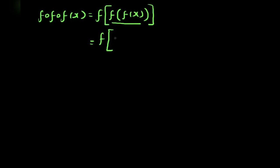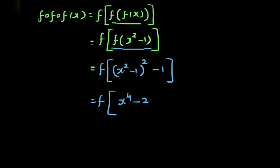So f of x square minus 1. We substitute where x is equal to x to the fourth minus 2x square. So f of x to the fourth minus 2x square, that is equal to x to the fourth minus 2x square squared minus 1.